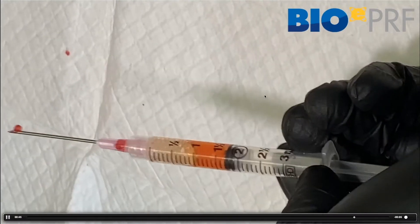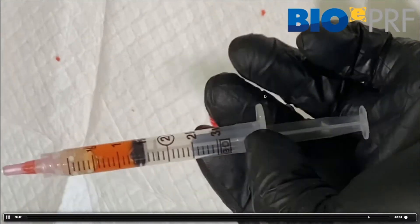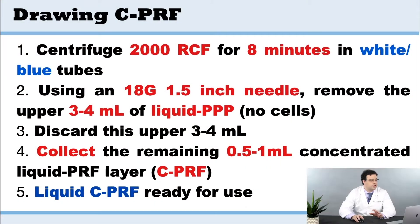When you want to draw the C-PRF, we reviewed this in protocol chapter number three. In this protocol, you have to make sure that you spin faster in the white tubes and the blue tubes. Make sure you do not use the red tubes. It has to be done in the liquid PRF tubes.